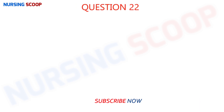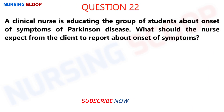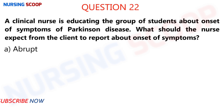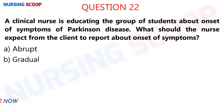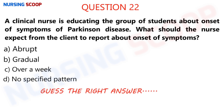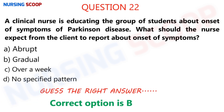Question number 22: A clinical nurse is educating a group of students about onset of symptoms of Parkinson's disease. What should the nurse expect from a client to report about onset of symptoms? Option A is abrupt onset. Option B is gradual onset. Option C is symptoms appear over a week. Option D is there is no specified pattern. The right answer is B.